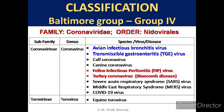Some of the veterinary important viral diseases under this family are avian infectious bronchitis and transmissible gastroenteritis, which we will be discussing in detail in this video. Other diseases include calf and canine coronavirus, feline infectious peritonitis, blue comb disease, SARS, MERS, and COVID-19.